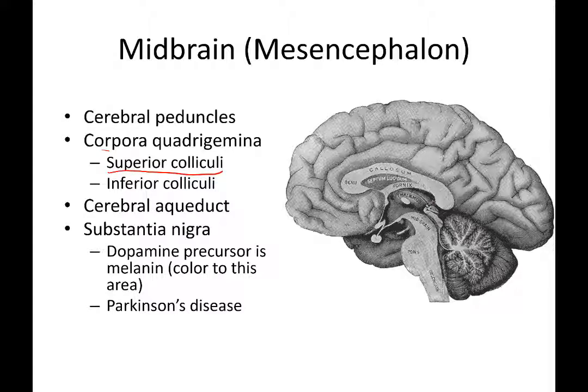The superior colliculi are responsible for visual tracking. If you're watching a baseball game, you might watch a pitcher throw the ball to a batter and track the ball as it launches out. The superior colliculus controls the muscles of our eye and helps us track objects within our visual field so we're able to follow them.